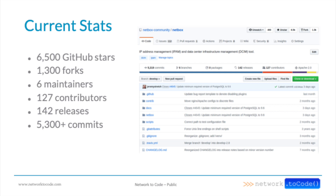For version 2.9, the biggest item is object-level permissions, which has been our number one requested feature for years. Also included: user UI preferences such as toggling and rearranging table columns — actually already snuck into a recent 2.8 release — background execution for scripts and reports, and extension of secret assignments so secrets can be assigned to objects beyond just devices. We're targeting 2.9 for around June or July this year.